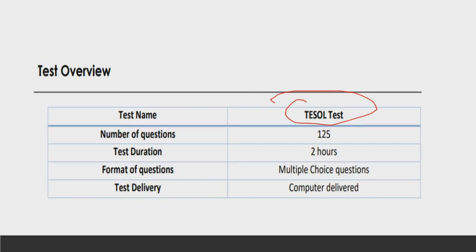It's called the Tissol test and you are going to have 125 questions — that's a lot, but if you are thoroughly prepared it is going to be as easy as ABC. The test duration is 2 hours, but because the number of questions is 125, time seems to fly. The format is MCQs — multiple choice questions — and the test delivery is computer-delivered. You only have to choose the right options, which makes it super easy.